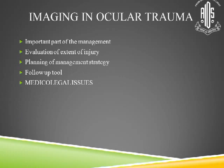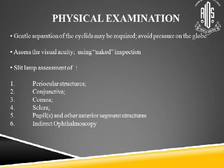Let's come to the important part — imaging in ocular trauma — which is a critical part of management, evaluating the extent of injury and planning the management strategy. It's a follow-up tool and very important for medico-legal conditions. We start with simple things like physical examination: torchlight examination, gently separating the eyelids, avoiding pressure on the globe, assessing visual acuity, slit lamp assessment of periocular structures, conjunctiva, cornea, sclera, pupil, and indirect ophthalmoscopy. Always check extraocular movements and the orbital margins.